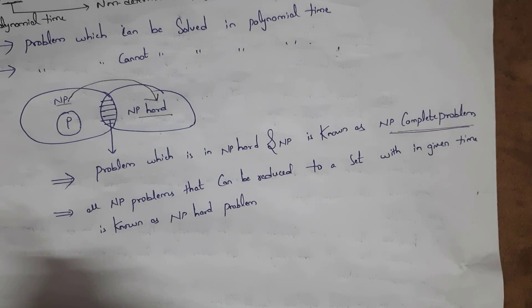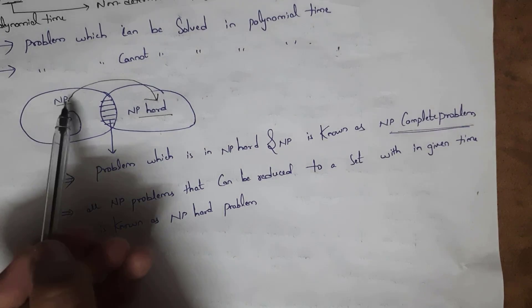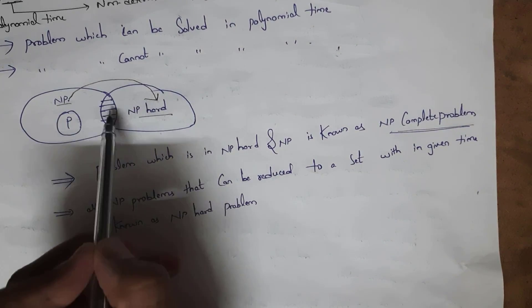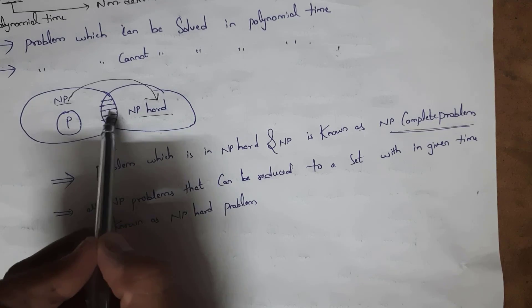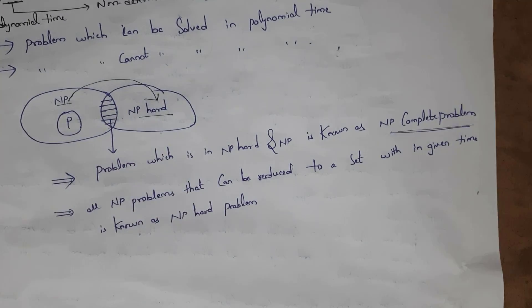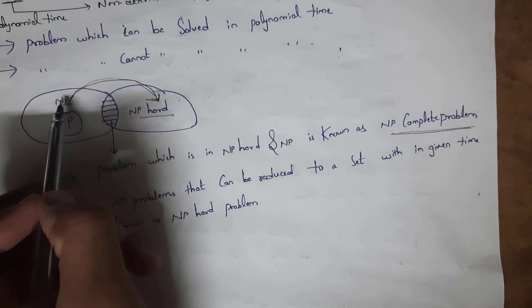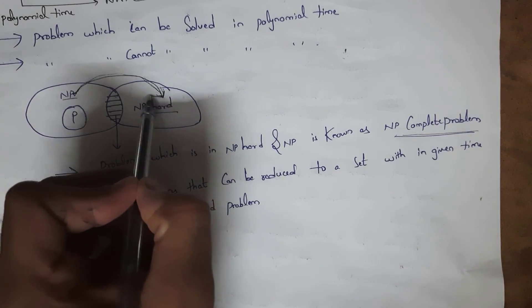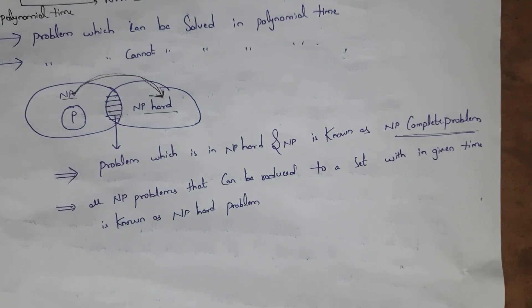Problems which are in NP as well as in NP-hard are known as NP-complete problems. All NP problems that can be reduced to a given set in polynomial time are known as NP-hard problems.